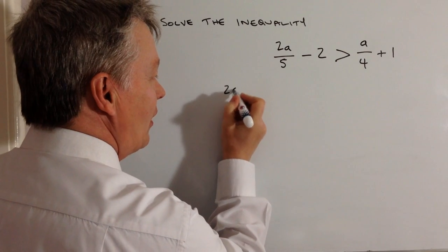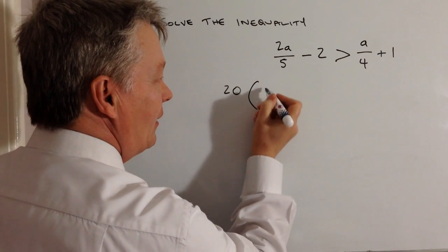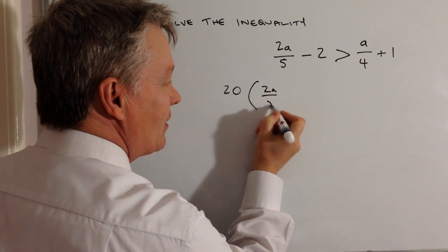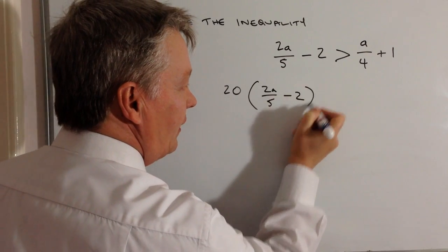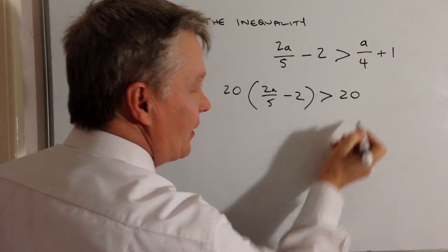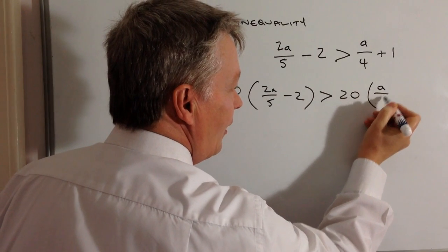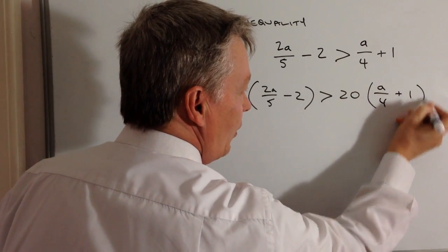So I'm going to multiply both sides by 20. I multiply this side by 20, which gives 20(2a/5 - 2), and that side by 20, which gives 20(a/4 + 1).